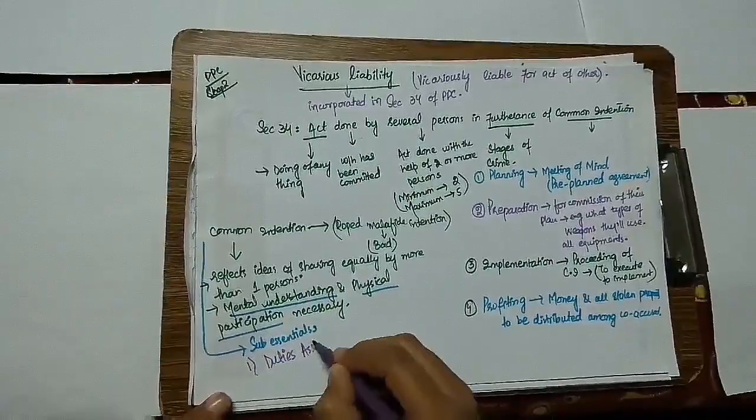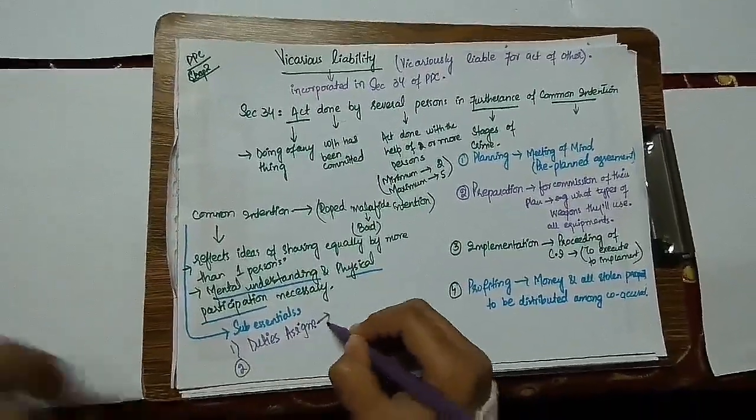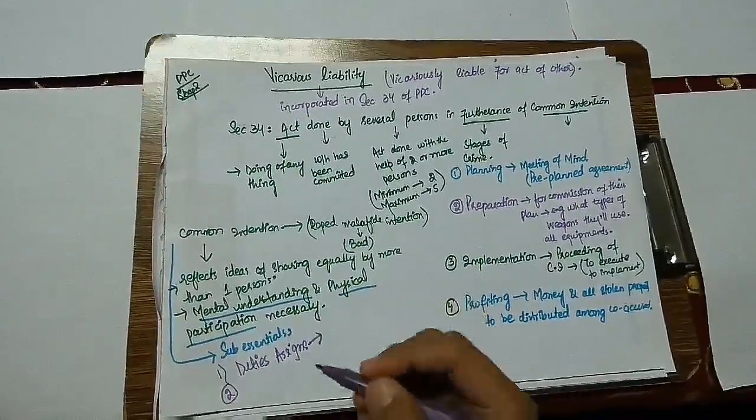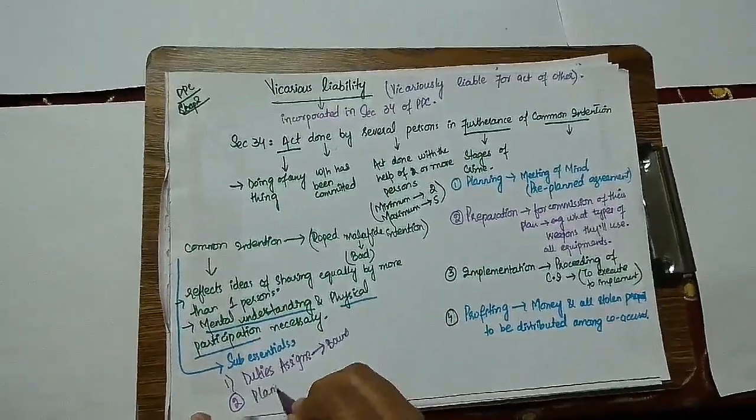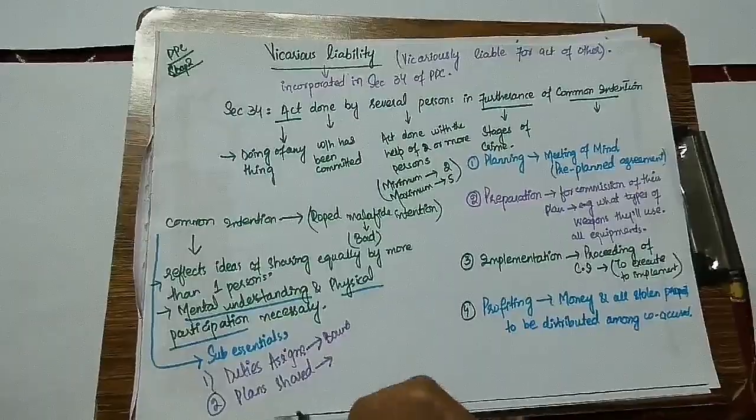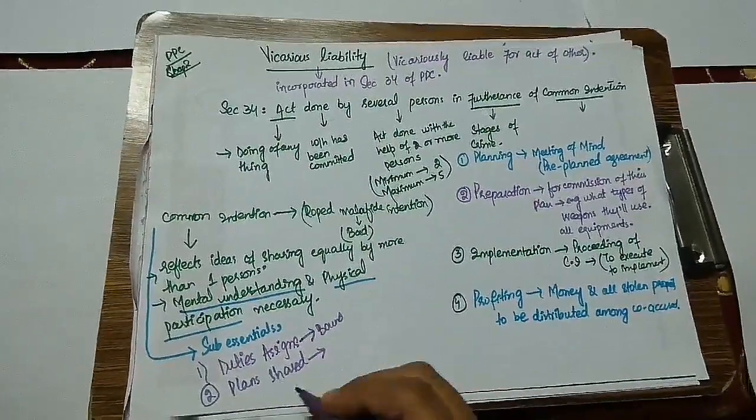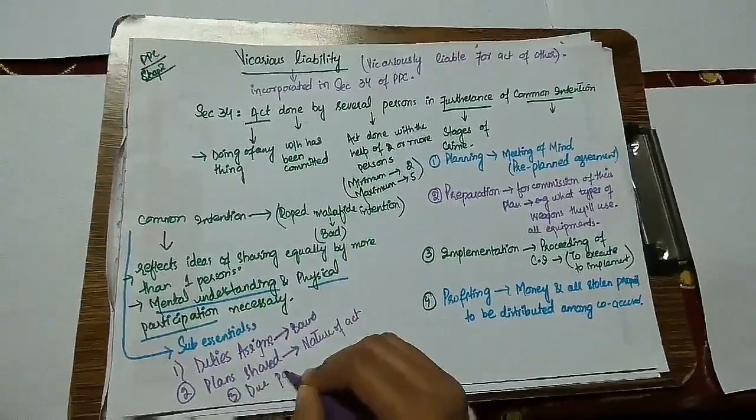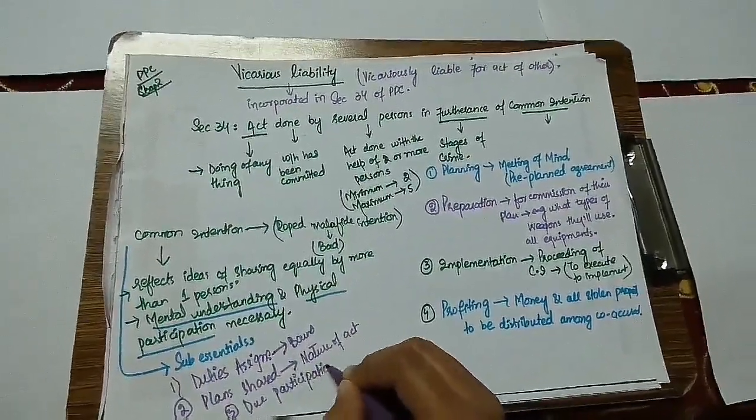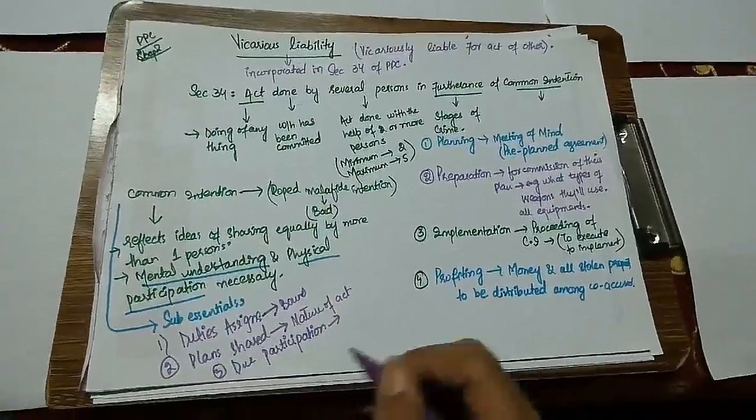What are all the essentials of common intention? When these people are planning, they assign duties to each other. And every co-accused is bound to perform their assigned duty. Second is, plan is shared. That is how they will commit the crime, which routes they will take to go and commit the crime. Due participation means every co-accused has to perform their duty.